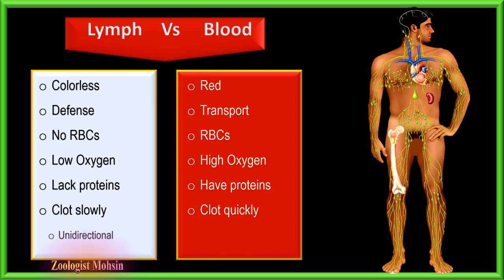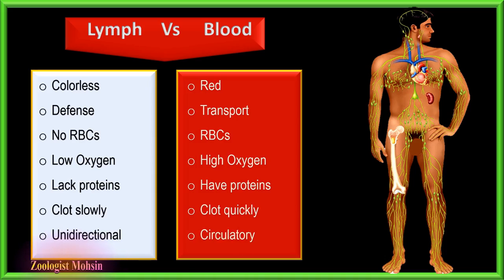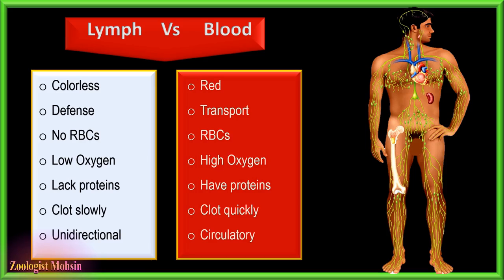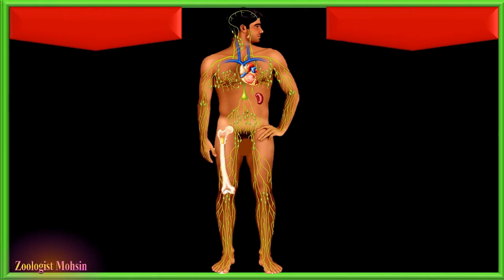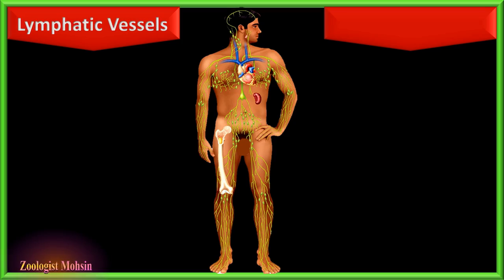Lymph clots very slowly while blood clots very quickly. The flow of lymph is unidirectional — from tissue fluid to the subclavian vein — while blood circulation is circulatory, continuously circulating in two different circuits: from the heart to the body, and from the heart to the lungs and back.